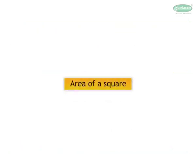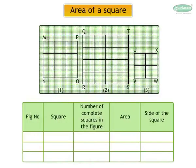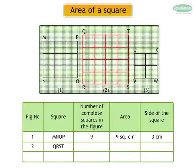Let us look at the area of a square. We can fill the table and find out the area of a square. Information regarding square MNOP is given. In square QRST, the number of complete squares are 16. Area is 16 square centimeters.